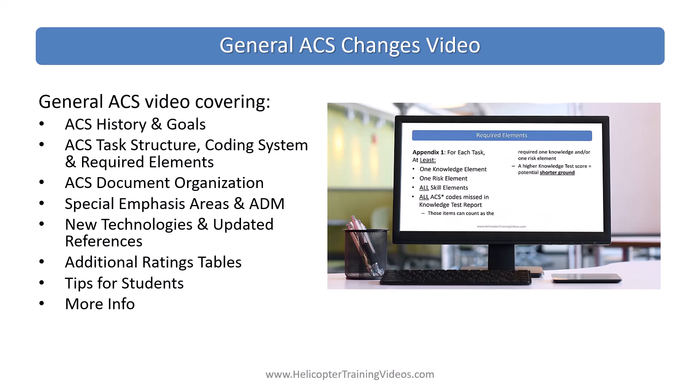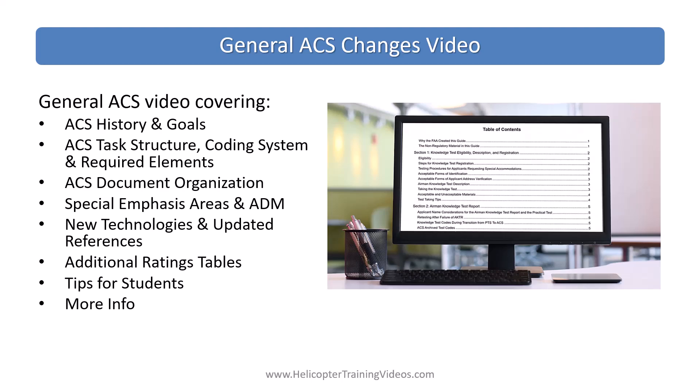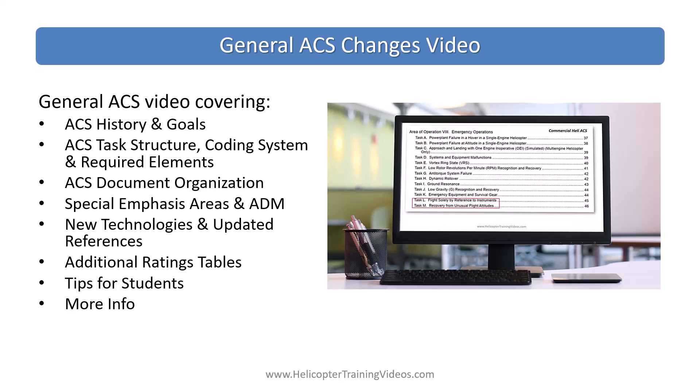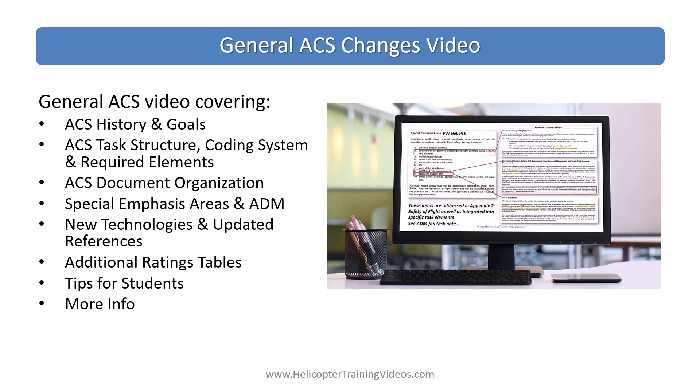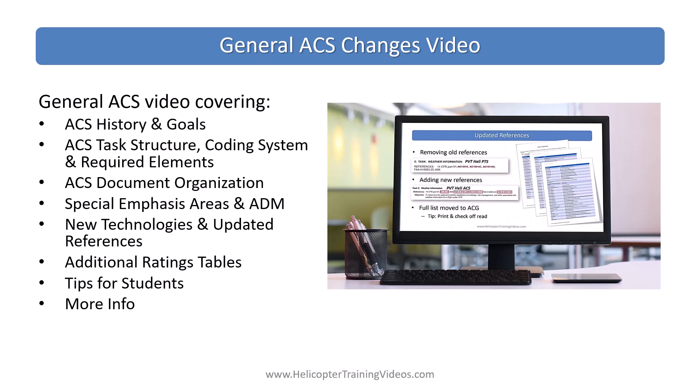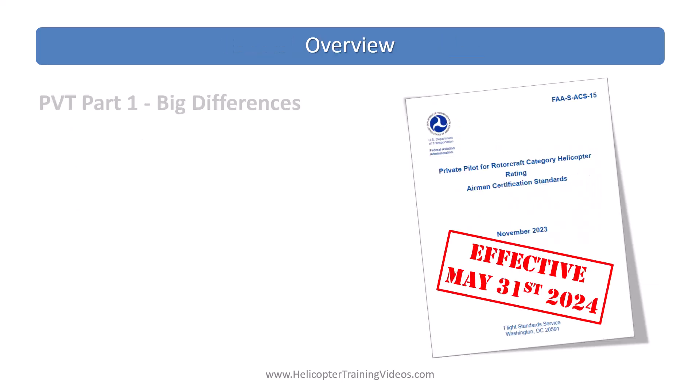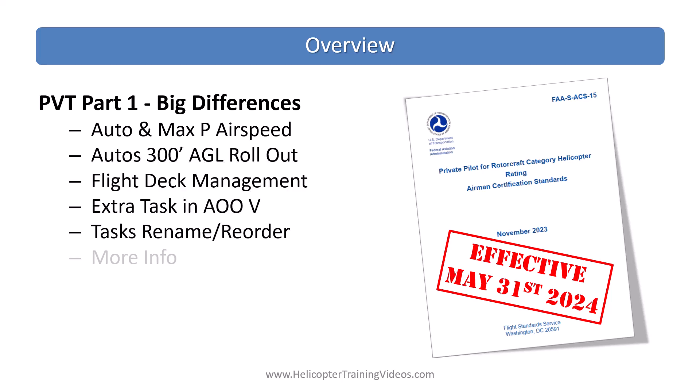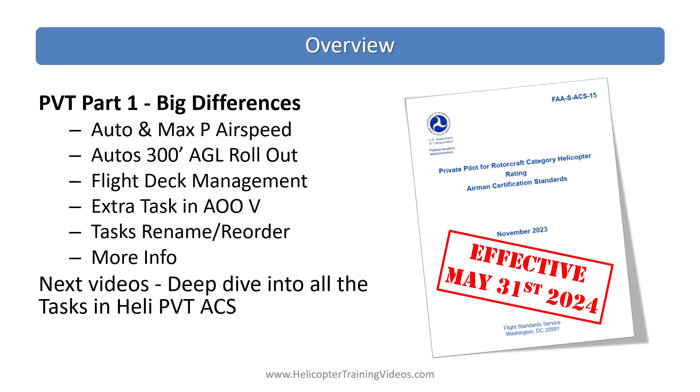The previous video covers the ACS history and goals, the task structure, the new coding system, the required elements, document organization, what they did with the special emphasis areas and ADM, how they dealt with new technologies and updated references, the additional ratings table, and some tips for students. With this video we're going to mainly focus on the big changes to the private pilot ACS. We'll be going through the auto rotation and max performance airspeed changes, the 300 foot AGL rollout requirement for autos, the flight deck management task, the extra task requirement in area of operations number five, as well as the renaming and reordering of the tasks.